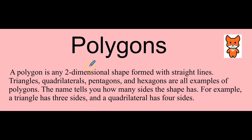A polygon is any two-dimensional shape formed with straight lines. Triangles, quadrilaterals, pentagons, and hexagons are all examples of polygons. The name tells you how many sides the shape has. For example, a triangle has three sides and a quadrilateral has four sides. This is a triangle.